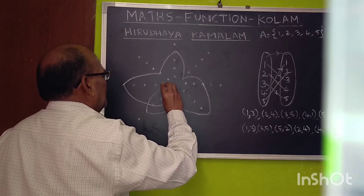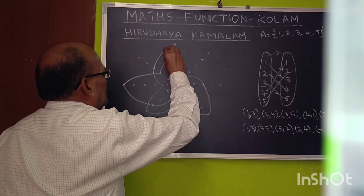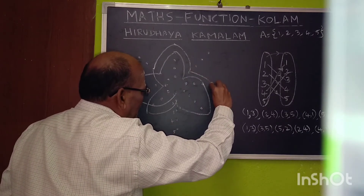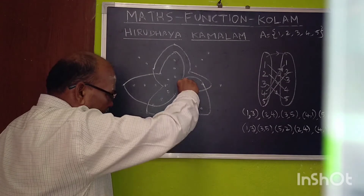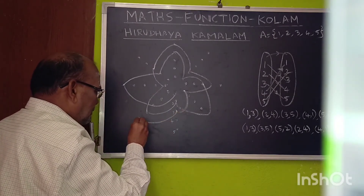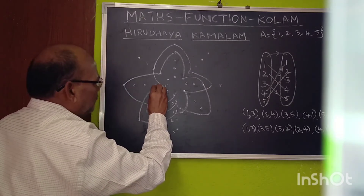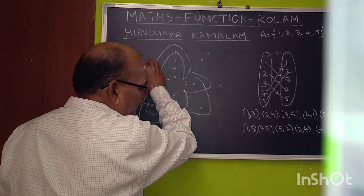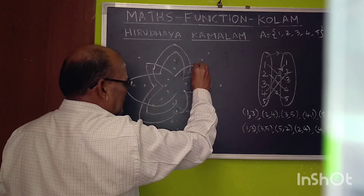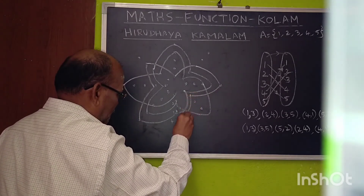Continuing: 1 to 3, 3 to 5, 5 to 2, 2 to 4, 4 to 1. Repeating the cycle: 1 to 3, 3 to 5, 5 to 2, 2 to 4, 4 to 1, tracing the pattern in all directions.